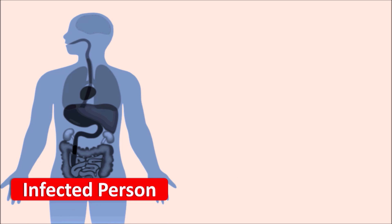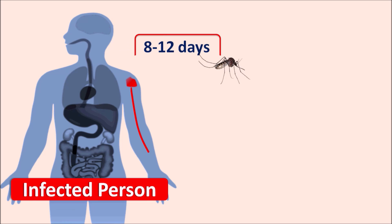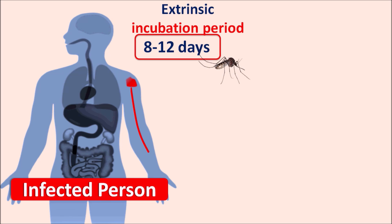When the Aedes aegypti bites an infected person, it sucks the blood, and the variants enter through the salivary gland into the midgut of the female mosquito. This mosquito can then be transported from one area to another, where the variants are replicated within the midgut. This takes 8 to 12 days, which is called the extrinsic incubation period — the replication of the virus outside of the host.